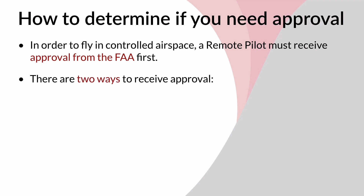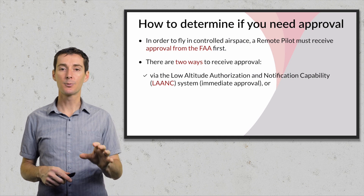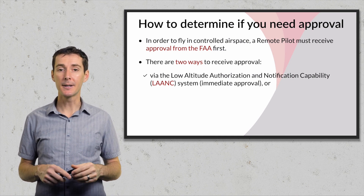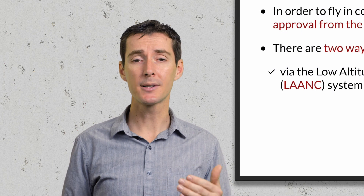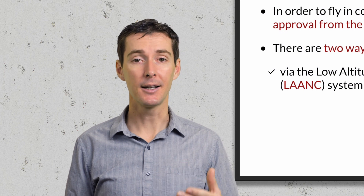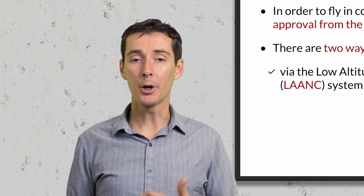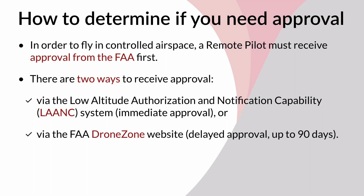In order to fly in controlled airspace you need to get approval from the FAA. There are two different ways to get approval. The first one is with a program called LAANC — the Low Altitude Authorization and Notification Capability. This approval is immediate. It was implemented in 2018, and before that it was a complete mess — it took me one time up to 11 months to get approval to fly in an airspace. Now it's instantaneous: you can go on your phone or computer, request approval, and get it immediately. LAANC is amazing. However, not all airports participate in LAANC, so in some cases you'll have to go to the FAA website called the Drone Zone, and that approval can take up to 90 days.